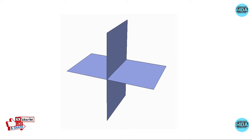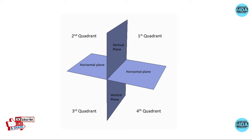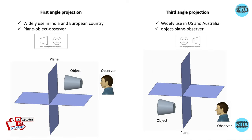We have four quadrants consisting of a vertical plane and horizontal plane — the first quadrant, second quadrant, third quadrant, and fourth quadrant. The first angle method of projection is widely used in India and European countries, and the third angle method of projection is widely used in the US and Australia.